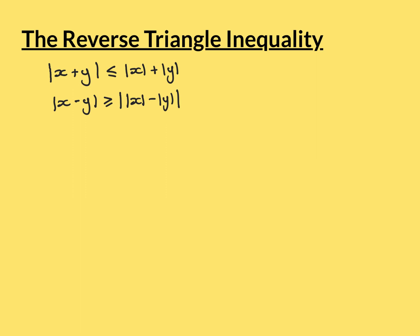What I've got written here is the main triangle inequality. It says that if you've got any two real numbers x and y, then if you look at what the mod of x plus y is, it's always less than or equal to the mod of x plus the mod of y.